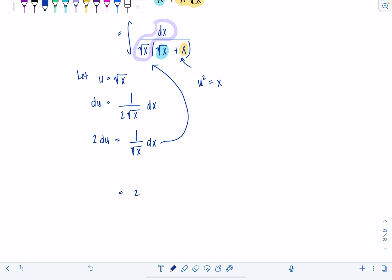And then the dx over radical x, that's my du. And then in the denominator, radical x becomes u, and then just x is u squared.